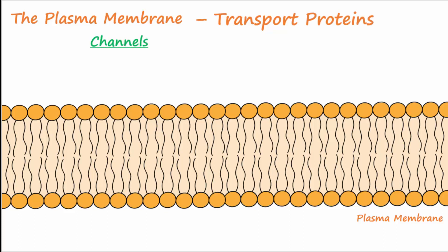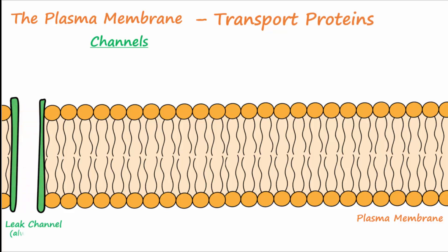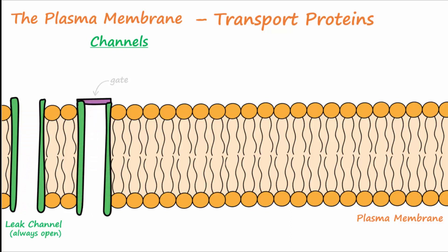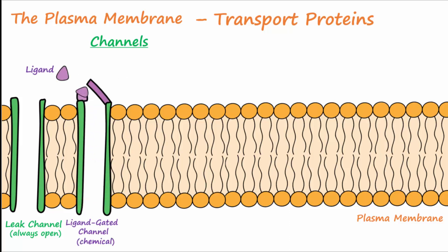One type of channel is the leak channel. Leak channels don't have any gates and are always open. Other channels have gates. Some gates on channels are opened by a ligand, which is a chemical binding to them, and these are called ligand-gated channels.